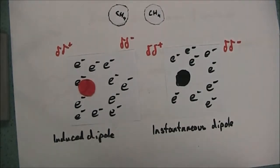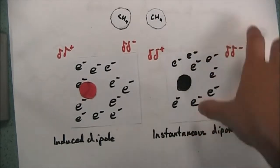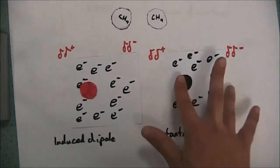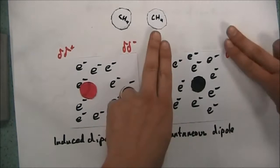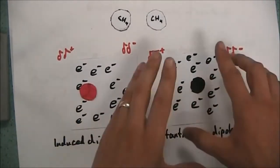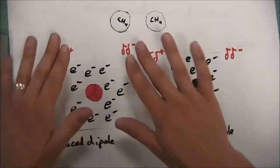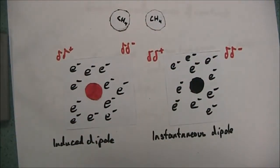There is an attraction between these two molecules caused by instantaneous and induced dipoles which holds them together to a certain extent. The last thing to say is that these are only temporary — the instantaneous dipole caused by the random movement of electrons may end, and then the induced dipoles will also cease to be. So they are temporary, but they are constantly happening at random positions on the molecule.